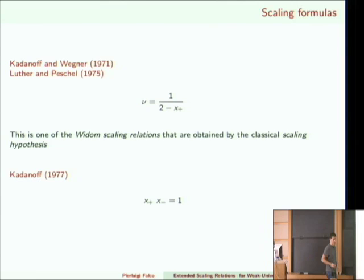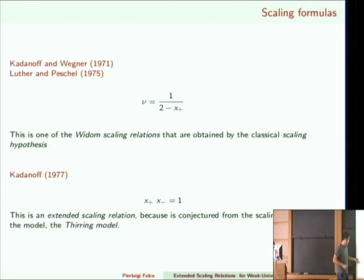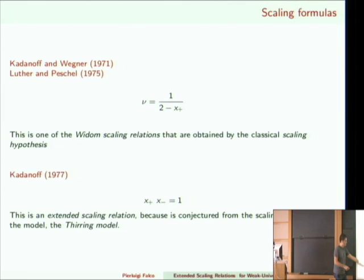Besides the scaling relation, there is another formula conjectured by Kadanoff: x plus and x minus are each model-dependent, but their product must be exactly one. This is called the extended scaling formula. Unlike the first, it is not supposed to be true in general but only for a special class of systems — those whose scaling limit is the Thirring model, a quantum field theory that is exactly solvable, in which this relation holds exactly.